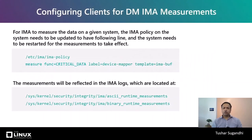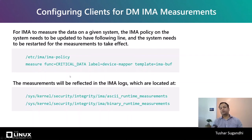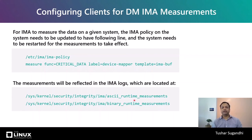For IMA to measure device mapper specific critical data on a given system, the IMA policy on the system needs to be updated to include the following line, and the system needs to be restarted for the measurements to take effect. Note that the label and the template here are optional. If you just say 'measure func=critical_data', it will measure data coming from all supported components. If you don't specify the template, IMA will just pick up the default template. The measurements will be reflected in ASCII runtime measurements and binary runtime measurement logs.